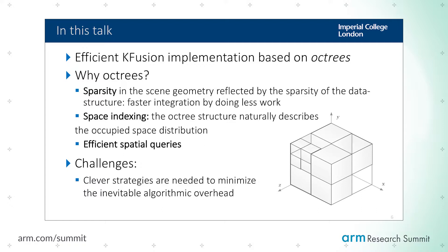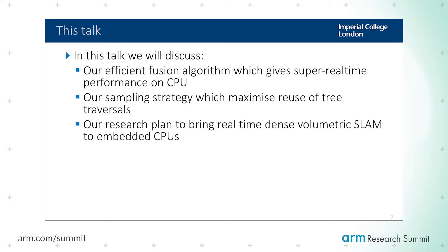The problem with this data structure is that it's a tree, and whenever you want to operate on it in parallel you have to be clever and efficient. There is an inherent overhead compared to just dense pre-allocated voxel grids. In this talk I'm going to describe our efficient information fusion algorithm for this data structure.